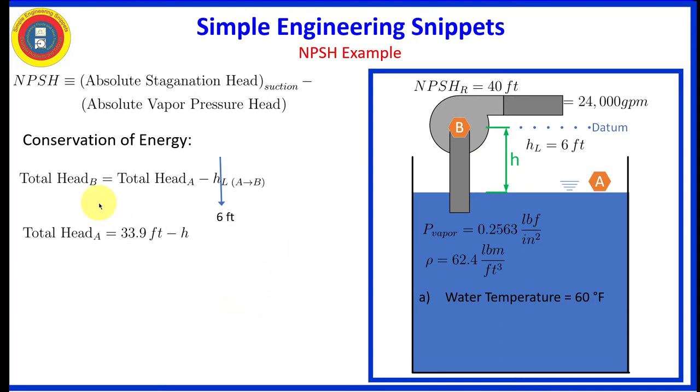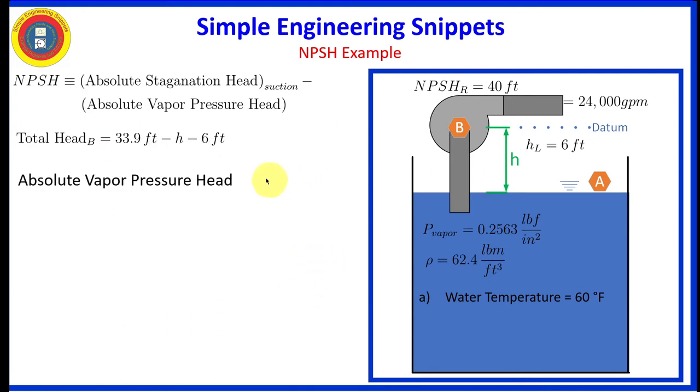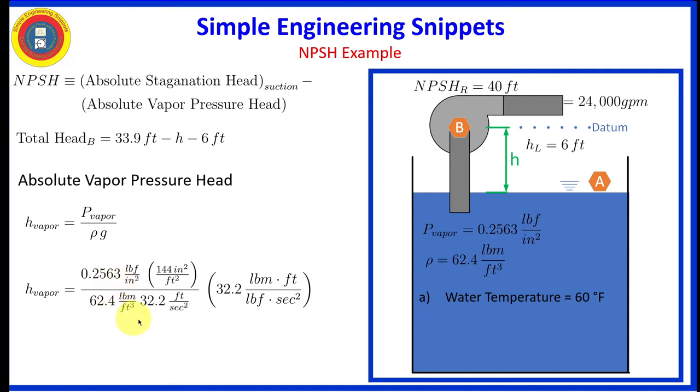Okay, now let's go back to the conservation of energy. Total head of Bravo is equal to total head of Alpha minus the head loss. So plugging that in, we get this equation for the total head of Bravo. And that's good, but we still need to determine the absolute vapor pressure head. It is determined by dividing the vapor pressure by rho G, the density times the gravity. So let's do that. You'll notice the conversion factors. And once again, with these English engineering units, we're going to need G sub C to get the units to work out. And we do that, we get the vapor pressure is equal to 0.592 feet.